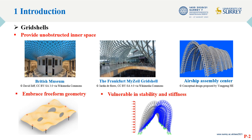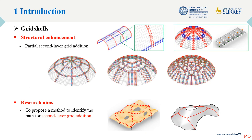However, gridshells are also vulnerable in stiffness and stability. To enhance the mechanical properties of gridshells, we can add second layer grids to the single layer structures.